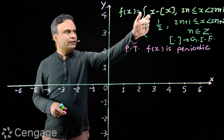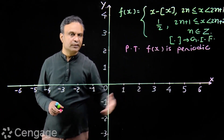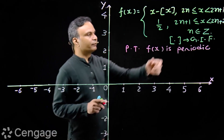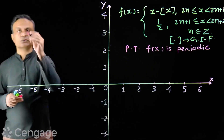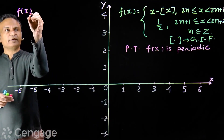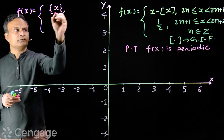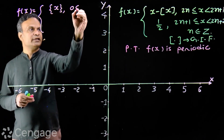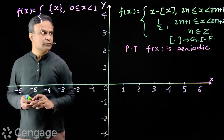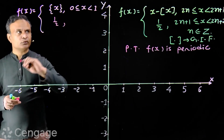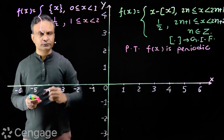Here, x minus greatest integer of x is the fractional part of x. We put different values of n, starting at n equals 0. We will have f(x) equal to fractional part of x for 0 less than or equal to x less than 1, and f(x) equal to 1/2 for 1 less than or equal to x less than 2.